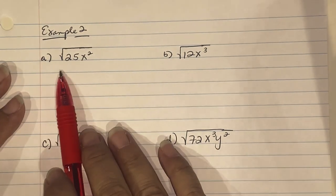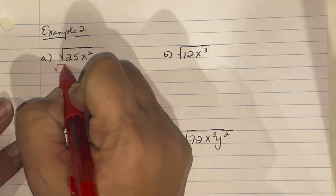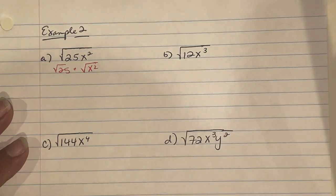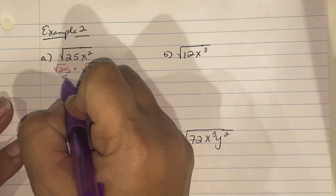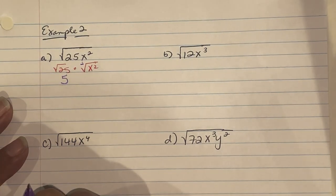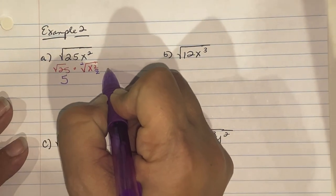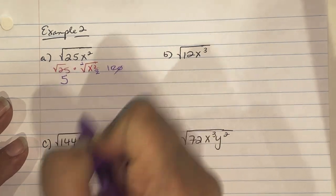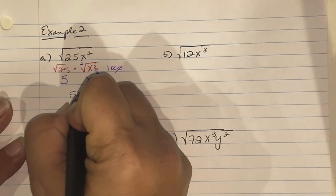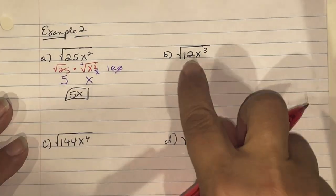In Example 2, we simplify √(25x²). Separate into individual pieces: √25 · √(x²). √25 = 5. For x², remember there's an implied index of 2, so 2 ÷ 2 = 1 remainder 0, meaning one x comes out of the radical. The final answer is 5x.